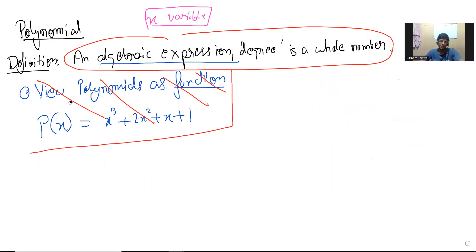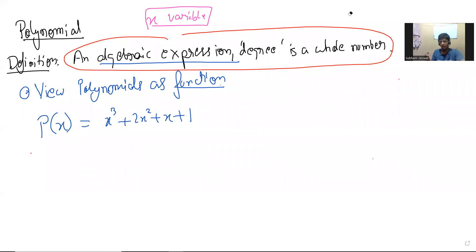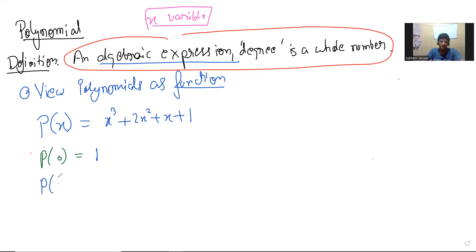Now we take the function view. This is where analysis, calculus, graphs, and those techniques come in to study the same things. If p(x) = x³ + 2x² + x + 1, then viewing it as a function: p(0) is 1, and p(1) is 1 + 2 + 1 + 1 = 5. It's just something that takes inputs and gives outputs. So we have defined polynomials in two different ways.